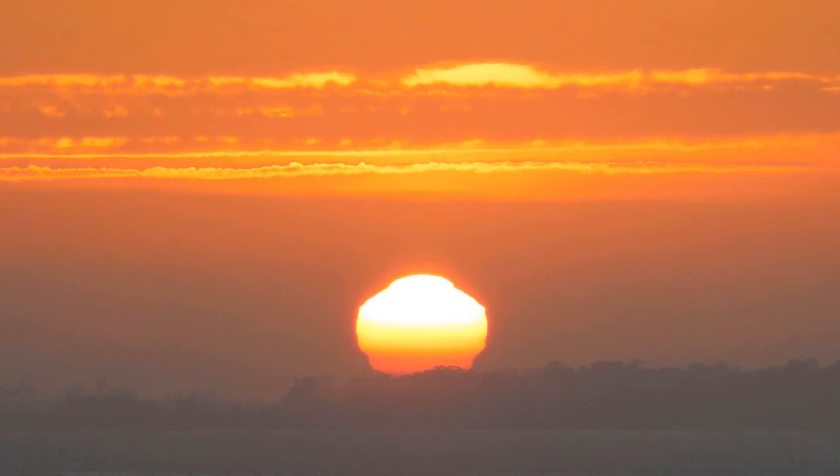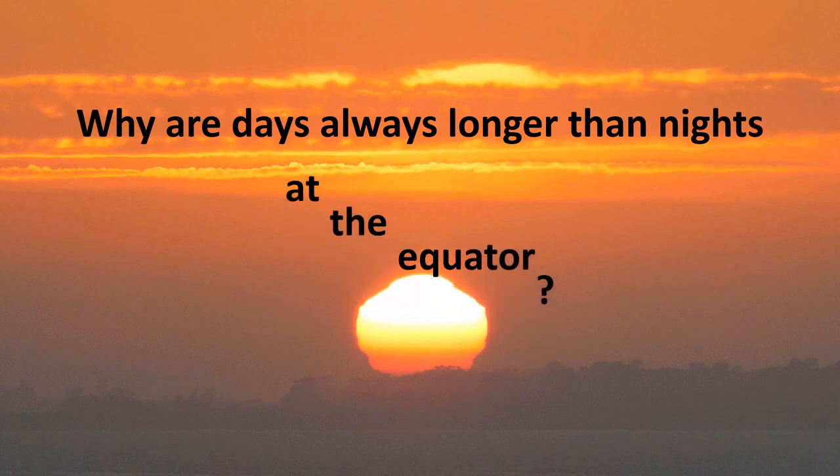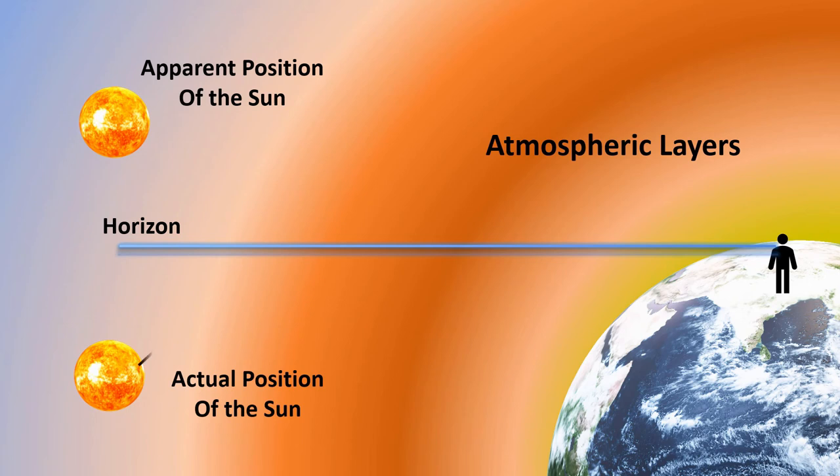By the way, have you ever noticed that normally days are longer than nights near the equator? Do you know why? Due to various atmospheric density, the sun's rays get refracted. It bends the light.